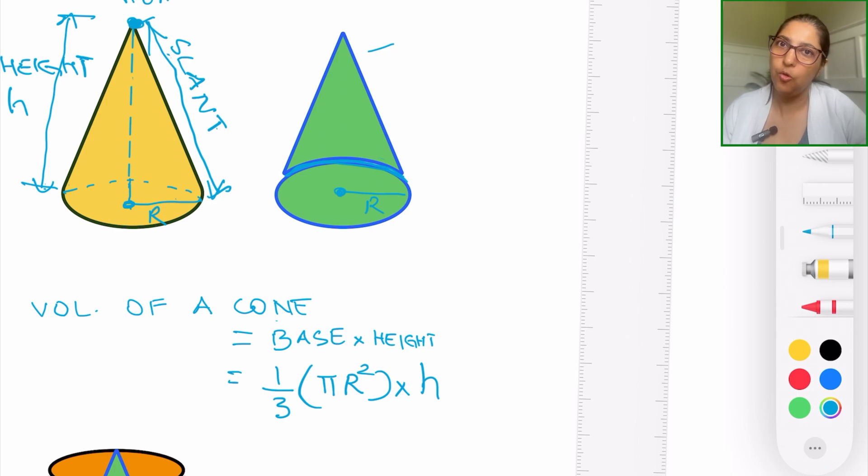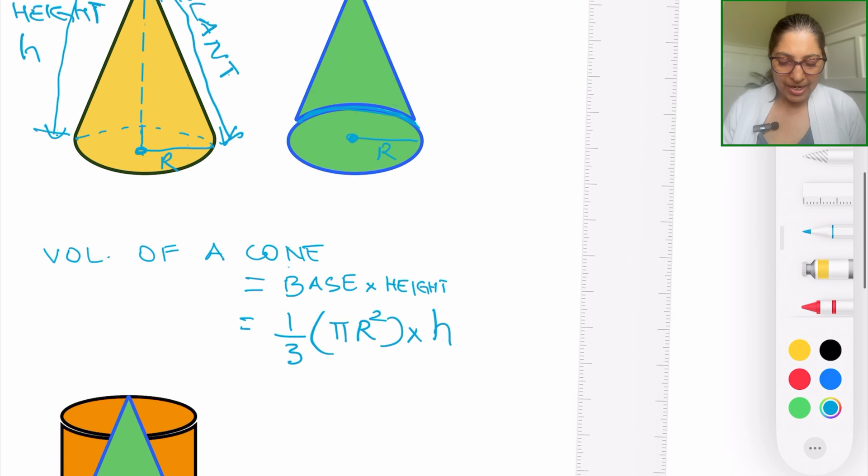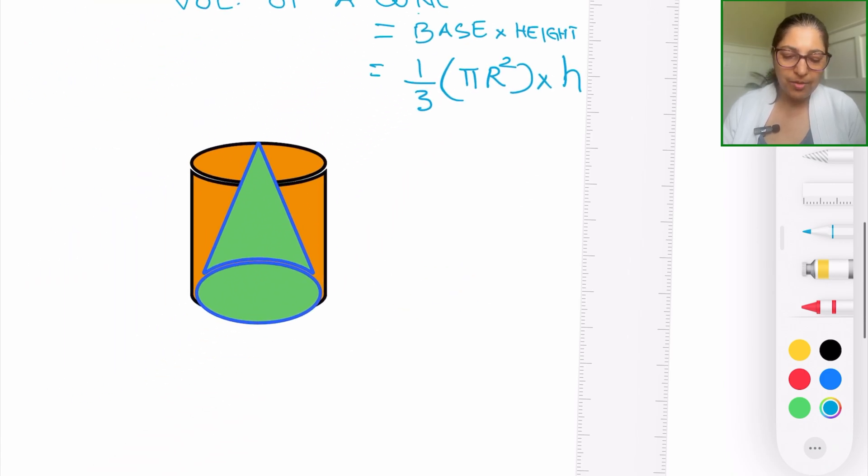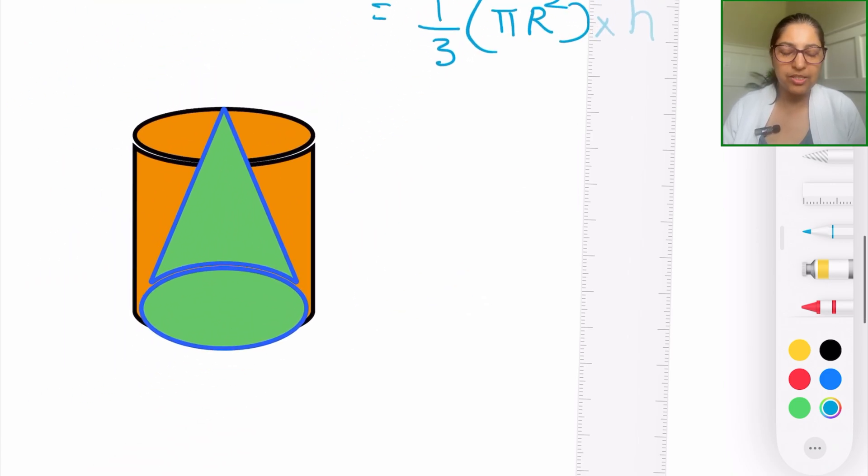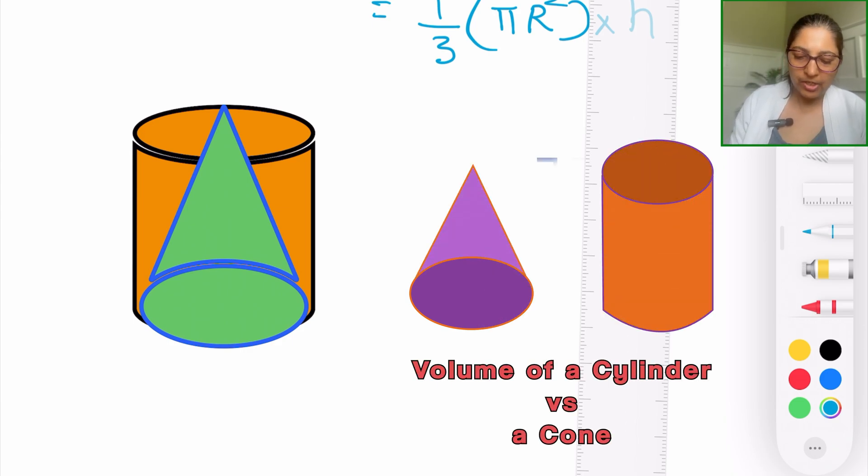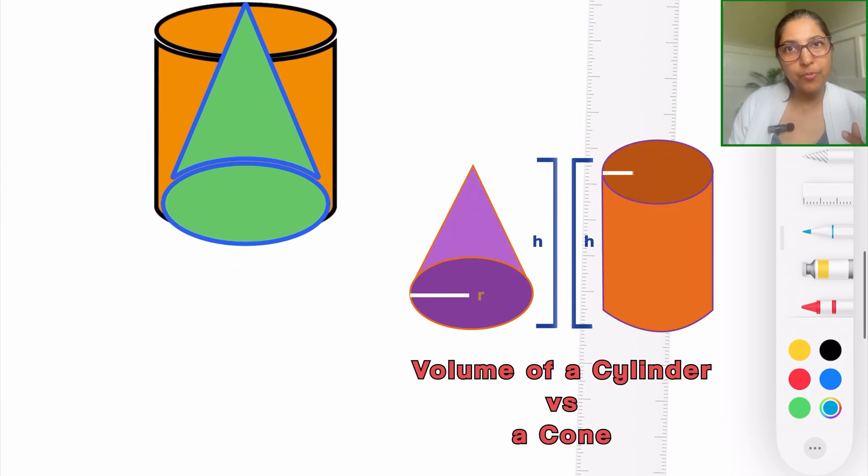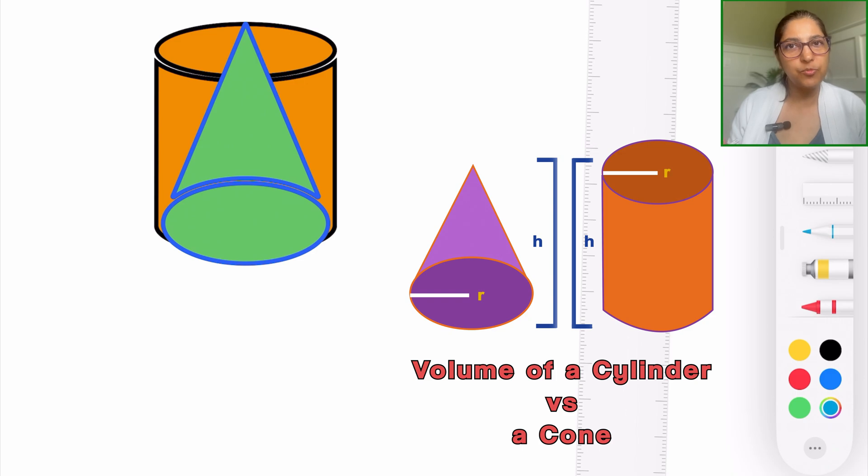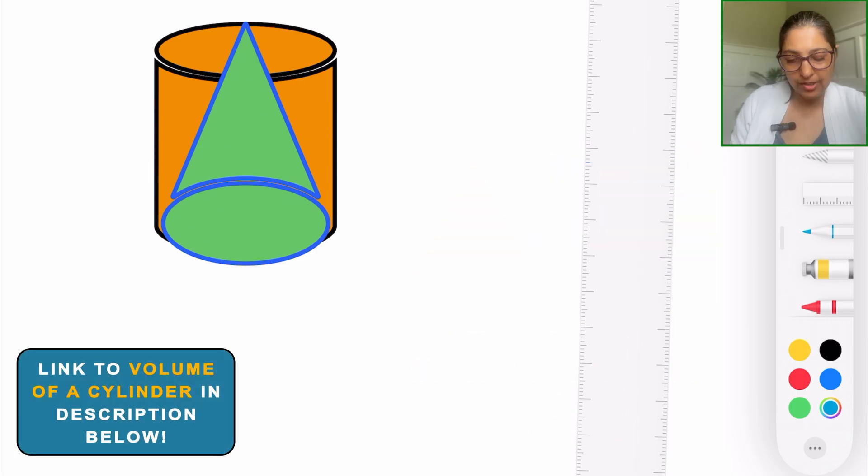Okay, now I've already drawn the shape here, and the idea what I'm talking about is the relation between the volumes of a cylinder and that of a cone. So we had already learned on a previous video, I will provide a link in the description box to the volume of a cylinder.